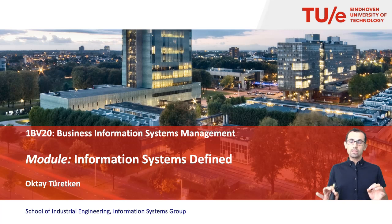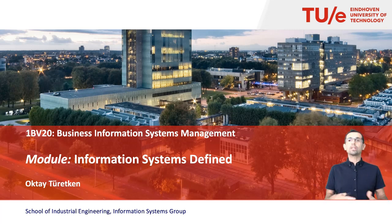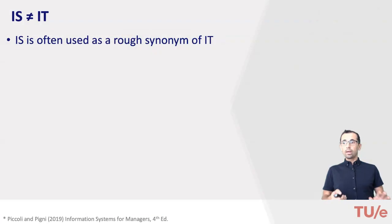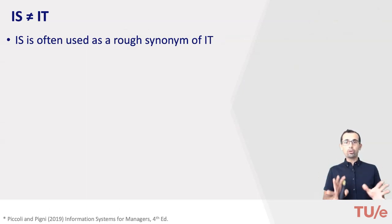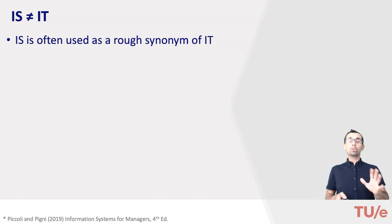We'll only define a few of them, starting with the very core one: information systems, or synonymously, business information systems — at least in this course — or enterprise information systems, or just IS in short. IS is often used as a rough synonym of IT, information technology, while there are important differences. Let's see an example.